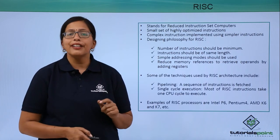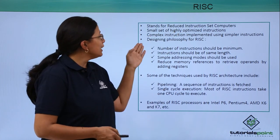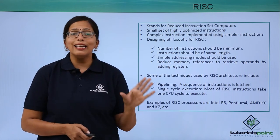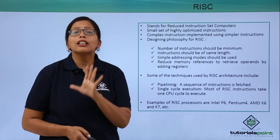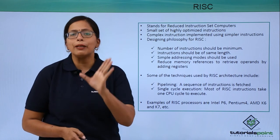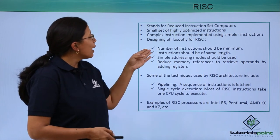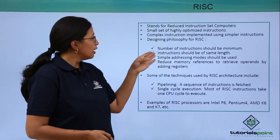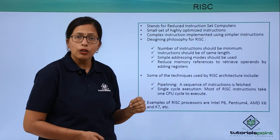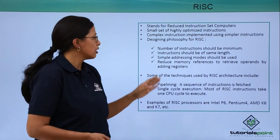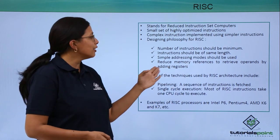First and foremost is RISC, which stands for Reduced Instruction Set Computers. These have a very small set of highly optimized instructions, meaning complex instructions are also implemented using very basic simple instructions. This minimizes the number of instructions. Instructions are of the same length, simple addressing modes are used — all because of the simple instruction set — and memory references to retrieve operands are reduced by adding registers.